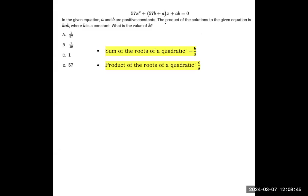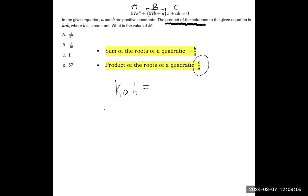So here, they're saying the product of the solutions — which is the same thing as the product of the roots — is k·a·b. But we know it as c over a. In our quadratic, this is the a, this whole thing is the b, and this is the c.